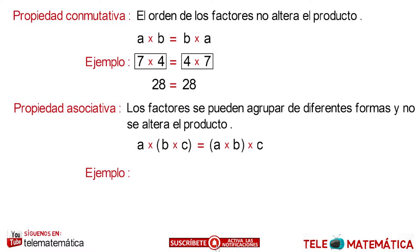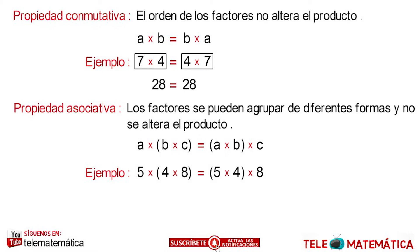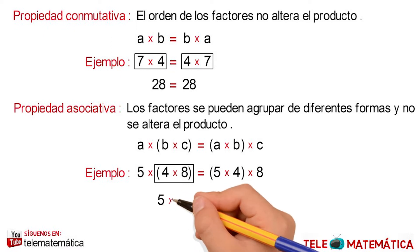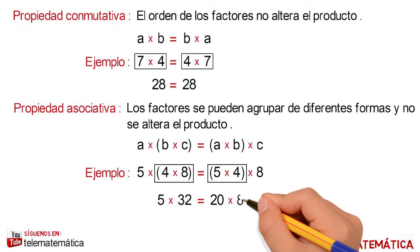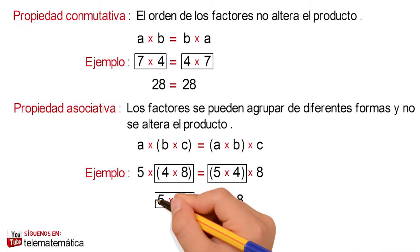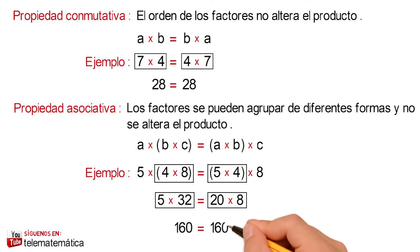Let's see an example: 5 multiplied by 4 by 8 is equal to 5 multiplied by 4, multiplied by 8. Applying the property, we start by solving the multiplication in the parentheses of the left member, giving us 5 multiplied by 32. Solving the right member gives 20 multiplied by 8, and solving both products we have that 160 is equal to 160, so the property is fulfilled.